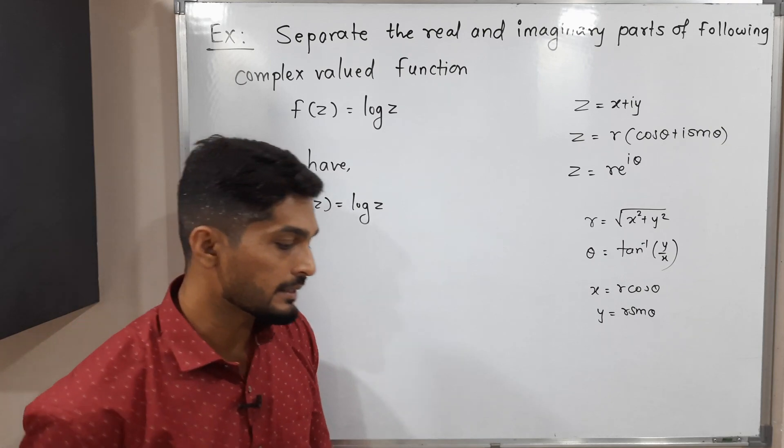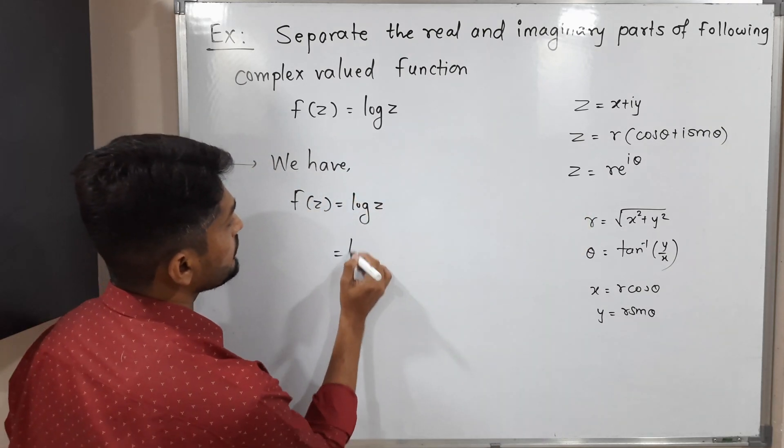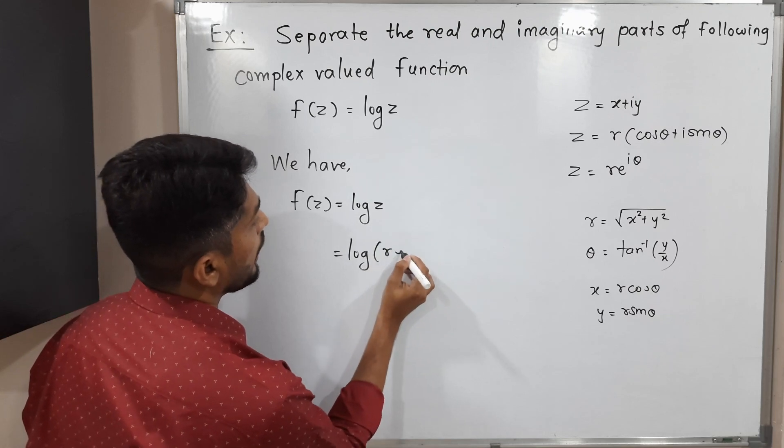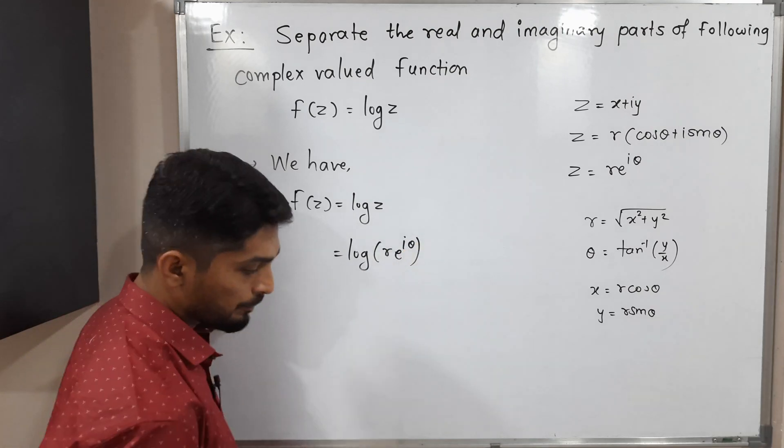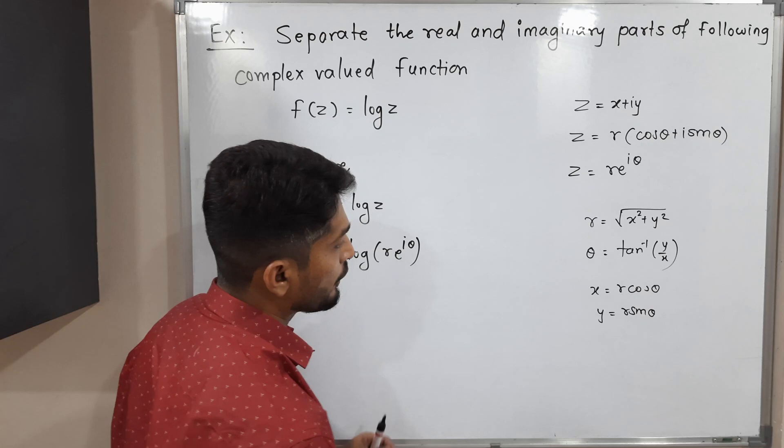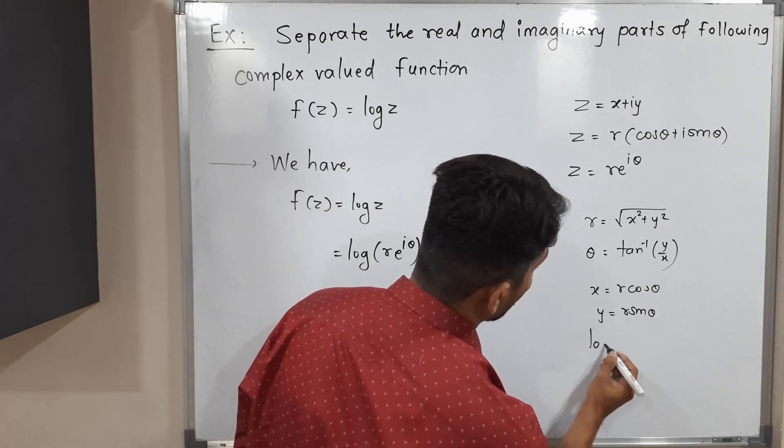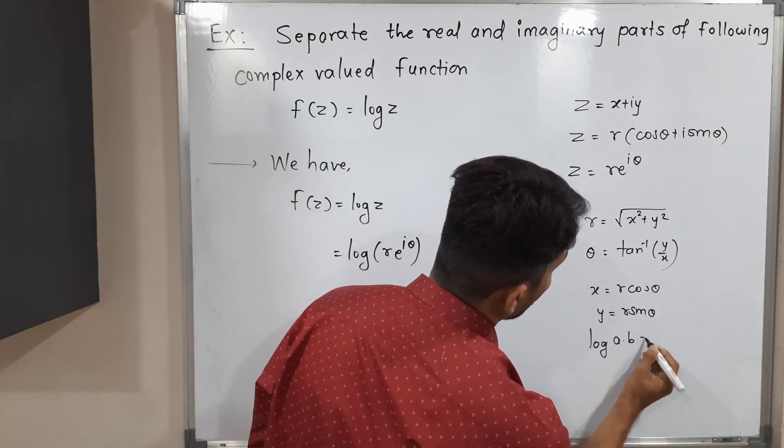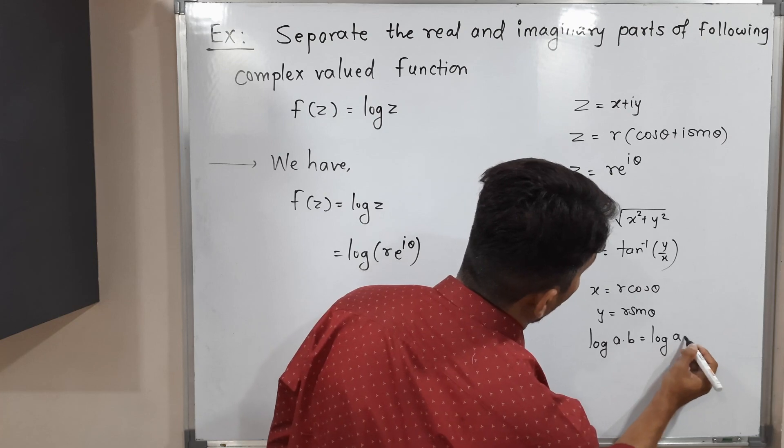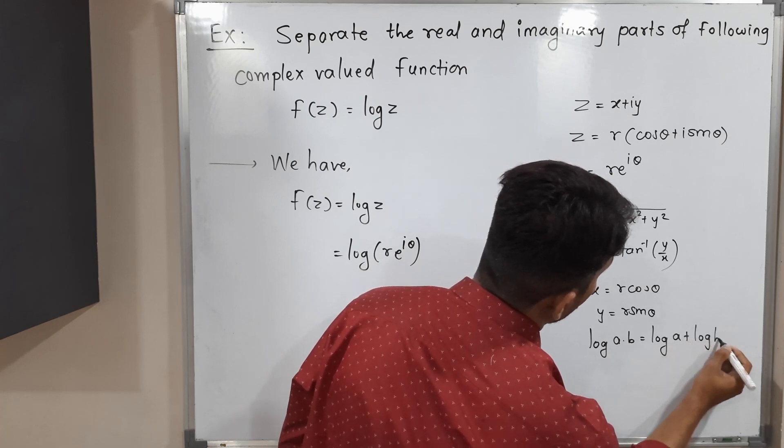Let us replace z by re^(iθ). So log(re^(iθ)). There is one property of log: log(a·b) = log a + log b.